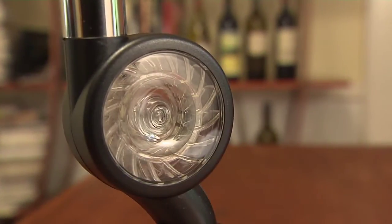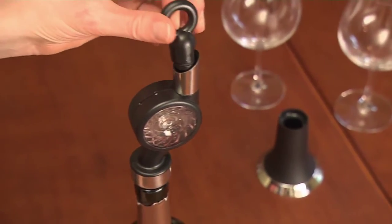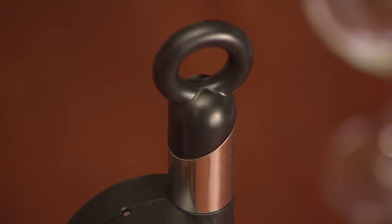It's a much easier way to bring out the full flavor and aroma. When you're not pouring, the Venerator stays on the bottle and becomes a wine stopper, sealing off the air.